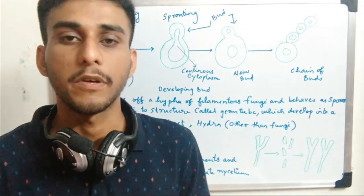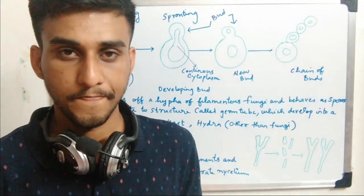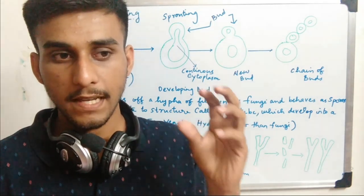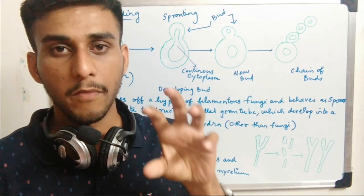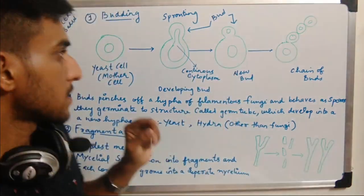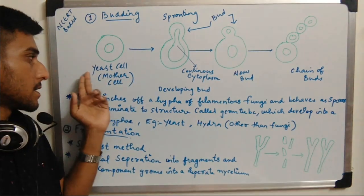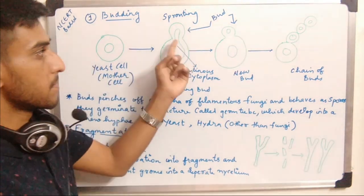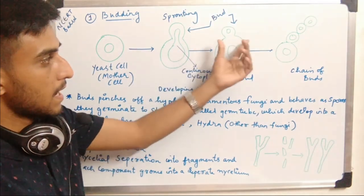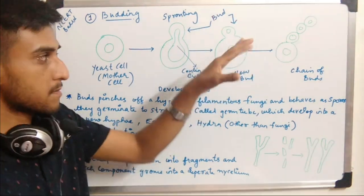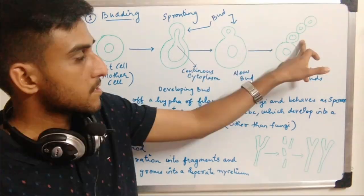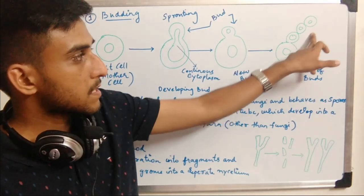In budding, a new bud forms from the mother cell — the parent cell. The cytoplasm also gets enlarged, then the cytoplasm gets divided and a wall is formed, creating a new bud. Multiple buds can be formed: the first bud, second bud, and the latest newly produced bud.